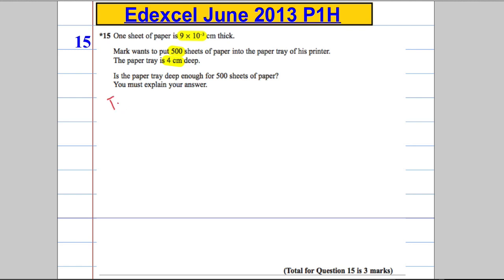So I'm going to write that the total depth of paper is going to be found by doing 500 because there's 500 of them, times by 9 by 10 to the negative 3.